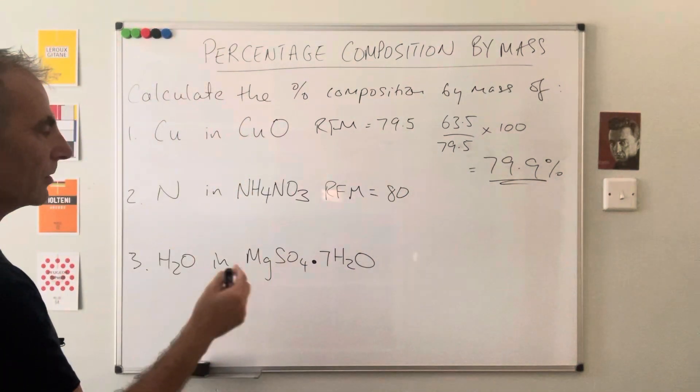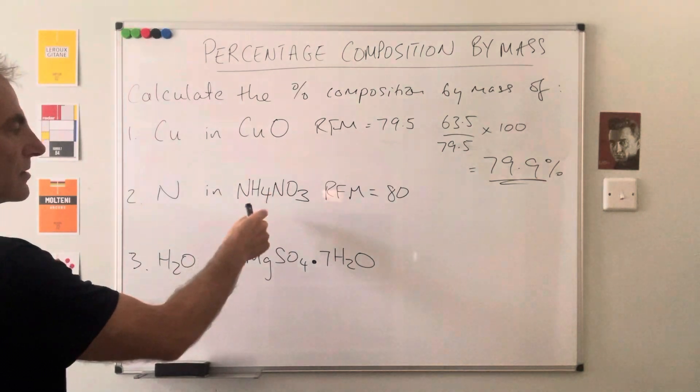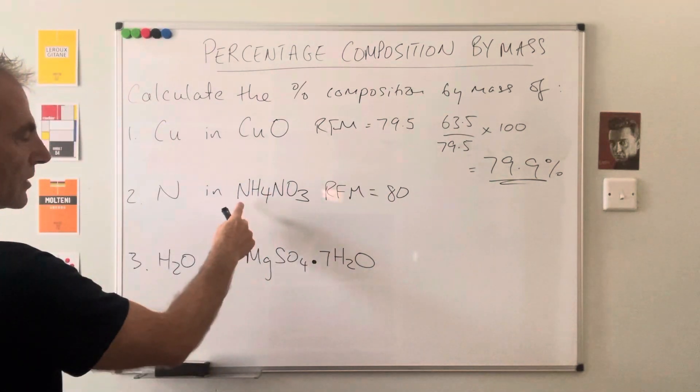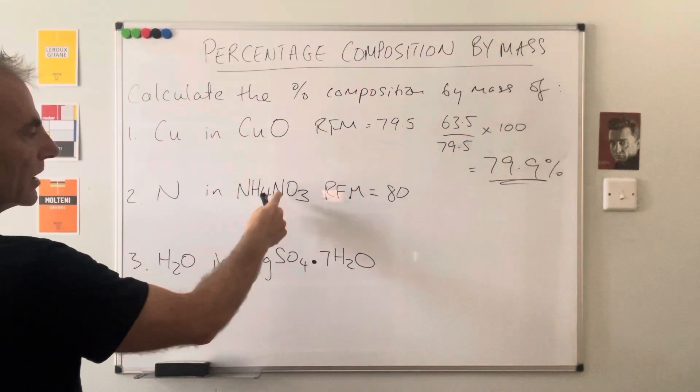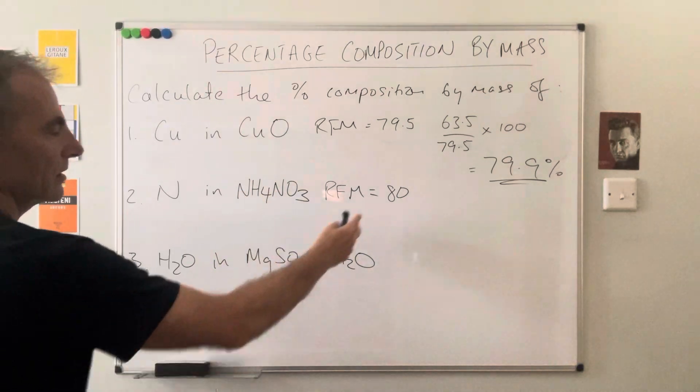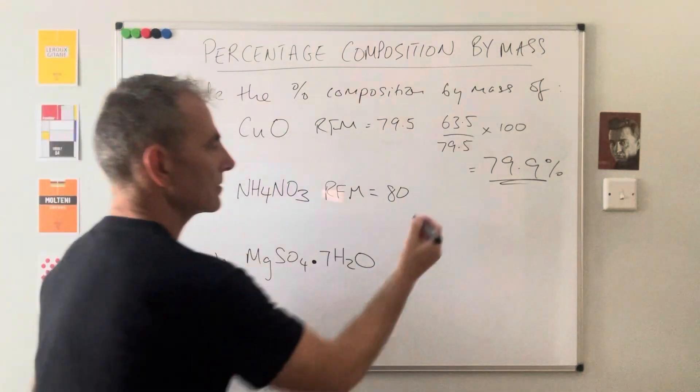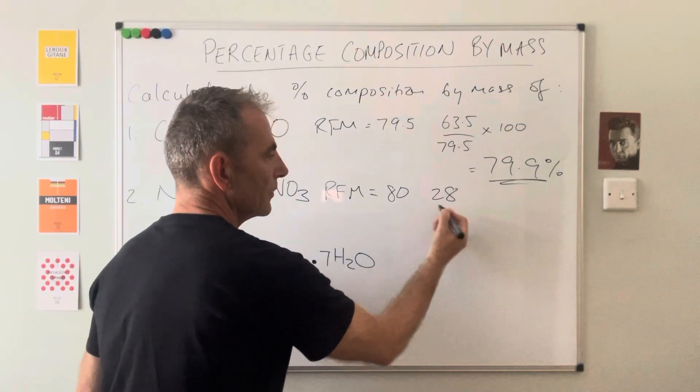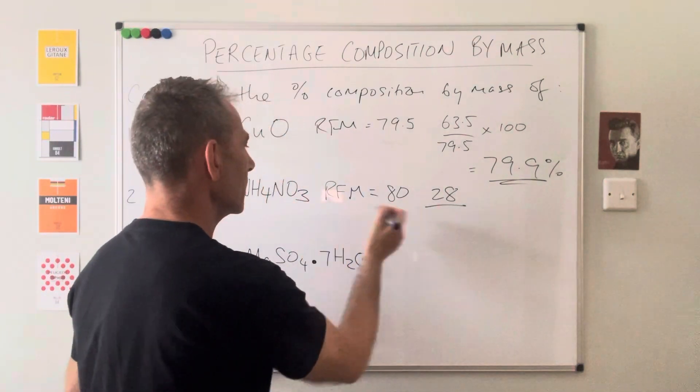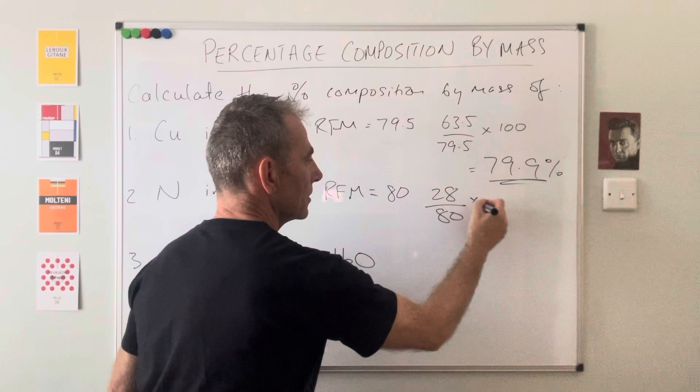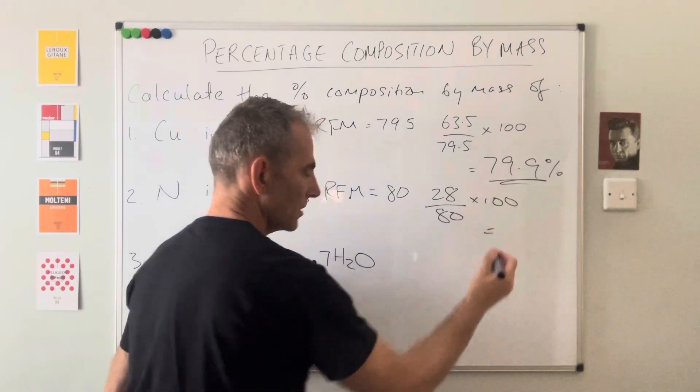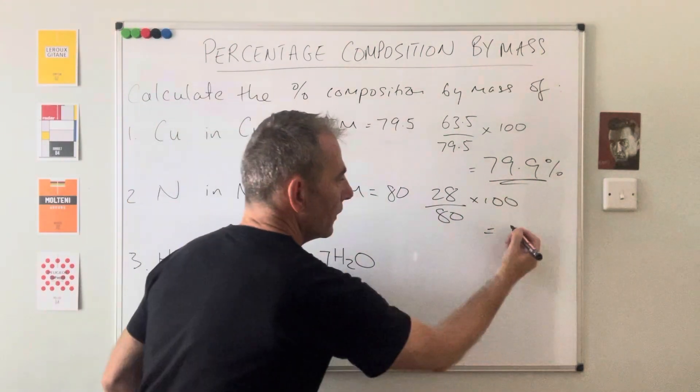So the thing to be careful with is we've got two nitrogens in this, so of that 80, we've actually got two times 14, so 28 is contributing to that 80. So 28, you can put two times 14 in a bracket, so 28 over 80 times 100, and that comes out at 35%.